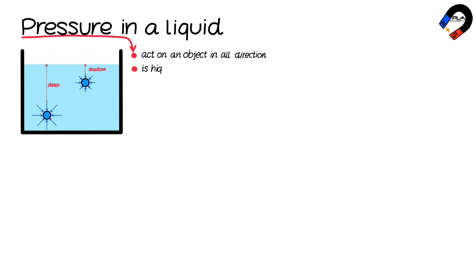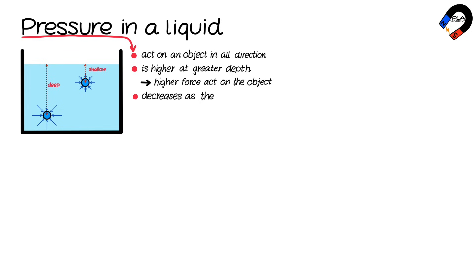Pressure in a liquid acts on an object in all directions. The pressure is higher at greater depths in the liquid, resulting in a higher force acting on an object compared to shallower depths. Pressure decreases as the object rises through the liquid.